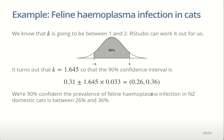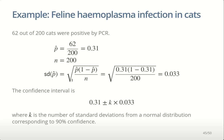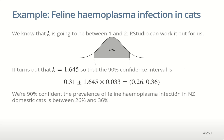We're 90% confident that the prevalence of feline hemoplasma infection in New Zealand domestic cats is somewhere between 26% and 36%. If we wanted a more precise range, there are two things we could do: decrease how confident we want to be (which would decrease k and therefore decrease the range), or increase our sample size (since n is on the denominator, a bigger n gives a smaller standard deviation of p-hat and a smaller interval). So to be more precise, we need to either be less confident or sample more.